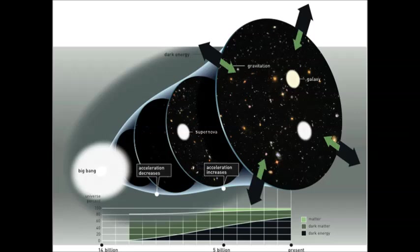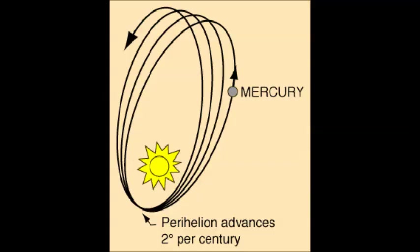Also, closer to home, the perihelion precession, which is basically just a slight shifting of planetary orbits over time, cannot be completely explained with Einstein's equations of general relativity.